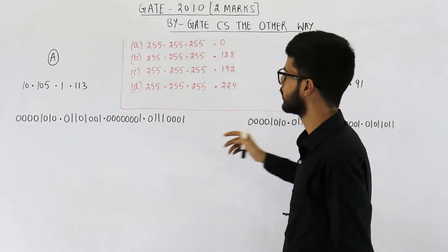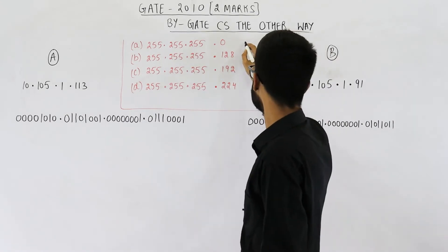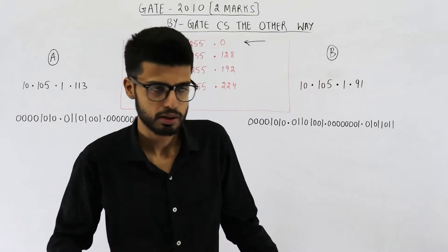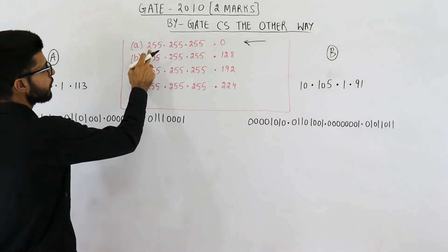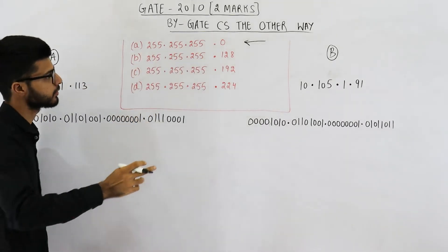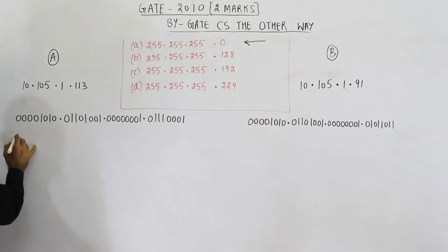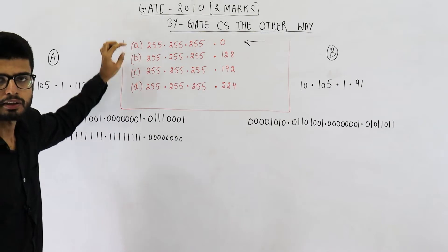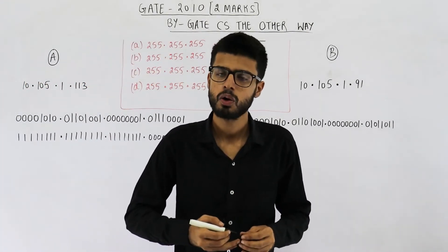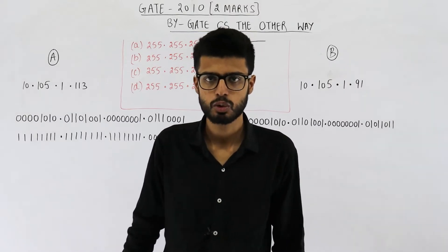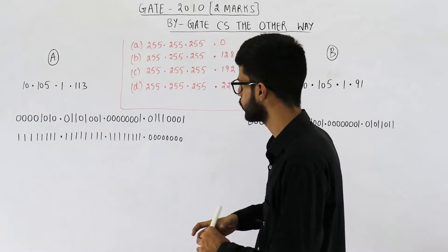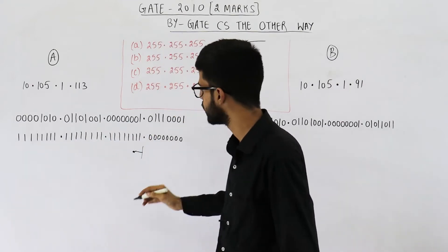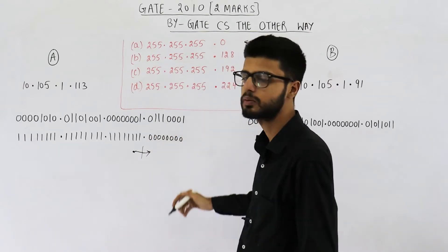I have converted these IP addresses into binary. Let us analyze option A. Option A says the first three octets are all ones and the last octet is all zeros. In a subnet mask, wherever you have ones, all of those bits are the network ID, and wherever you have zeros, that part is the host ID. So all of these bits are ones, meaning the last eight bits are the host ID.